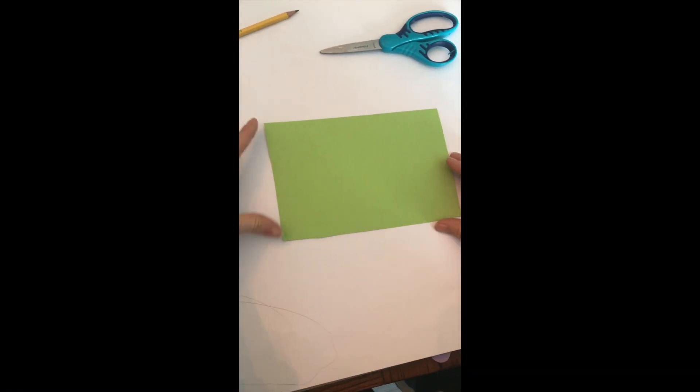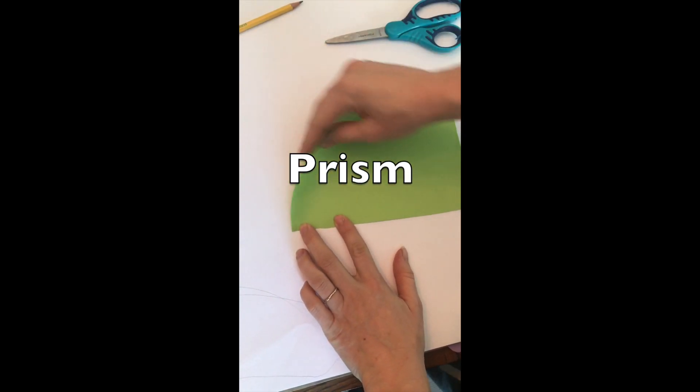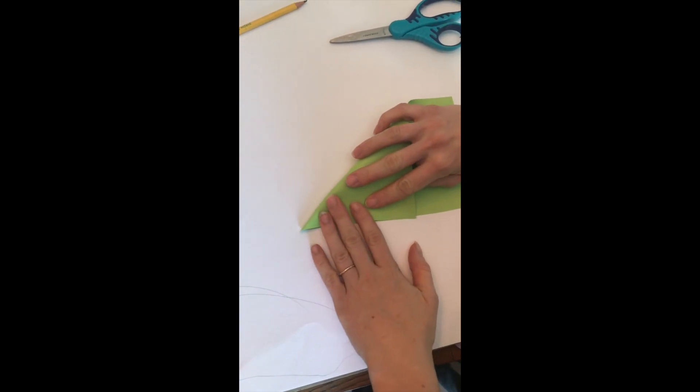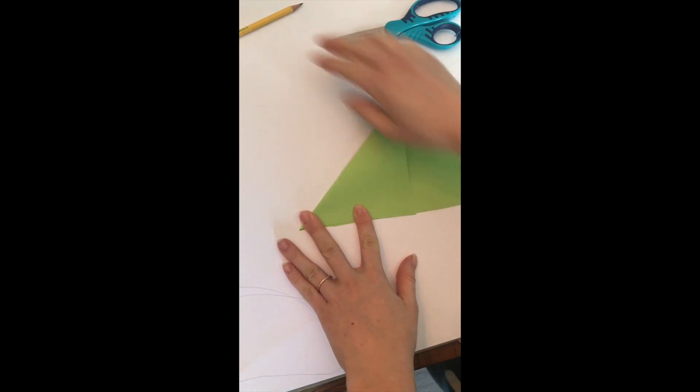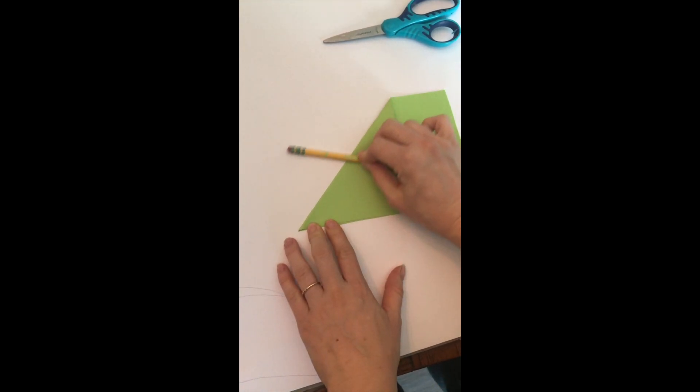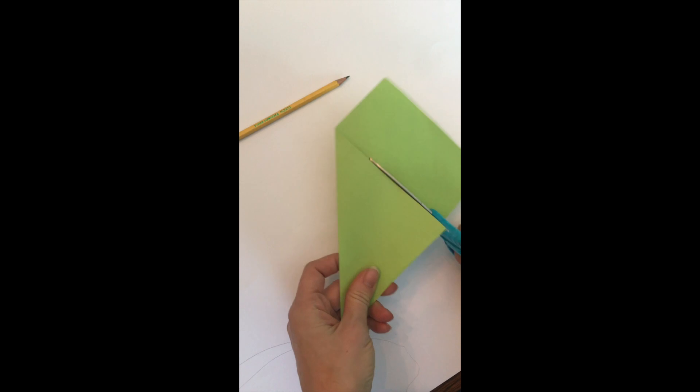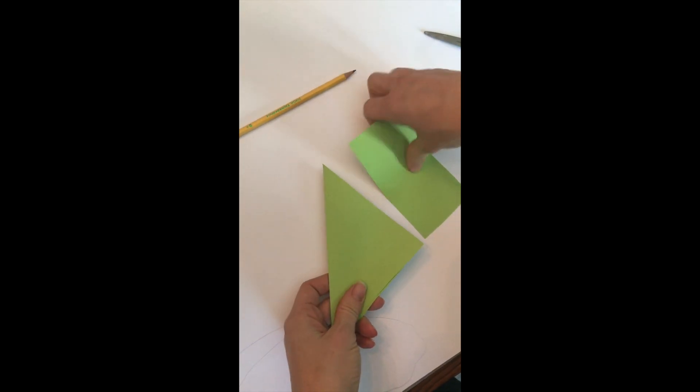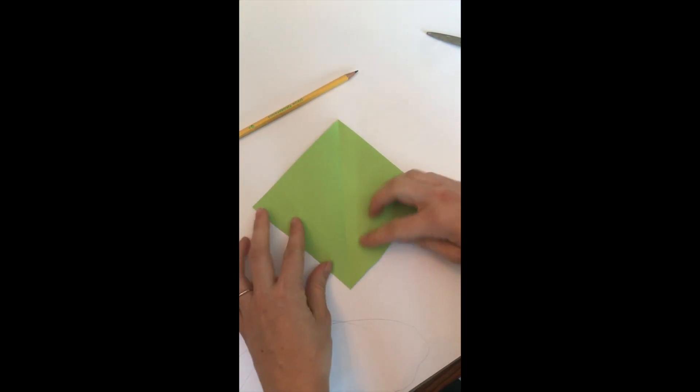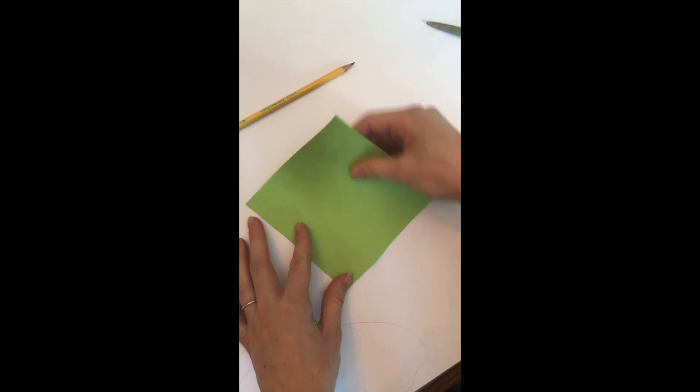Next I'm going to make a pyramid which needs to start as a square. I have a rectangle here so I'm going to turn it into a perfect square by folding the short side down to the long side of my paper and cutting off that extra. See a square is just two equal triangles. You can see that right when I unfold it.